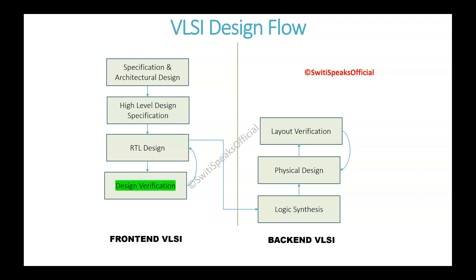If there are any problems found in layout verification, then we will redo the physical design step — in which we placed the gates and done the routing between them to meet timing and area constraints — and then again do layout verification. Until your layout verification is completely clean and meets the design specification, we will keep repeating the physical design step.